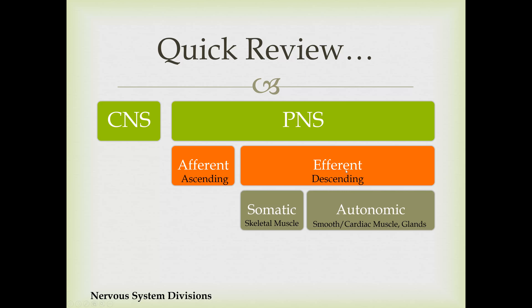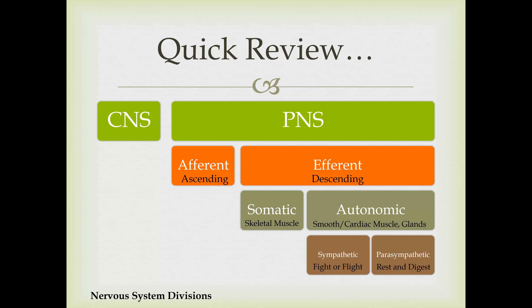We can further divide the efferent division into the somatic and autonomic divisions. The somatic division carries commands to skeletal muscles, and the autonomic division carries commands to smooth muscle, cardiac muscle, and glands, including adipose tissue. The autonomic nervous division can be subdivided into the sympathetic and parasympathetic divisions. The sympathetic division is the fight-or-flight, which prepares your body to handle emergencies, and the parasympathetic division is your rest-and-digest, which is your normal everyday function.